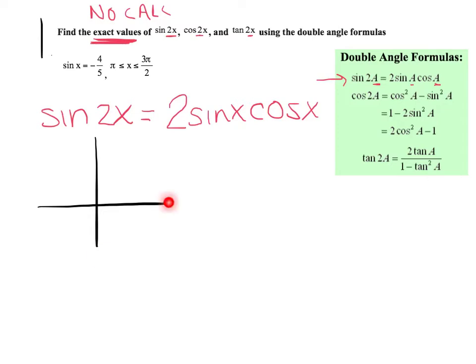Let's label our four positions on the unit circle in radians: 0, pi over 2, pi, 3 pi over 2, and back to 2 pi. They're telling me you are sitting between pi and 3 pi over 2, which puts me in the third quadrant.